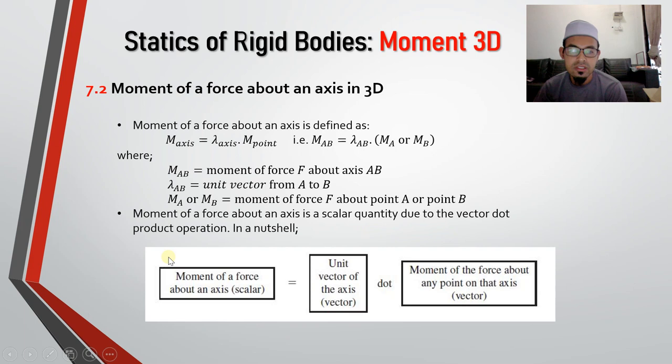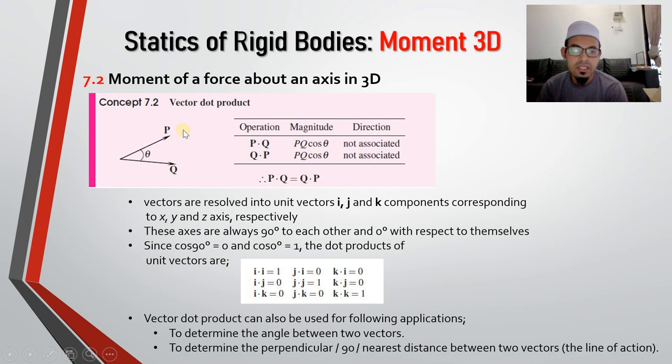So moment of a force about an axis is a scalar quantity due to vector dot product operation. So in a nutshell, moment of a force about an axis is basically scalar. So we have vector dot vector. Why vector? This is vector for lambda and this is vector for moment about point. So vector dot vector equals to scalar. Scalar means that our final answer must be in the form of magnitude only.